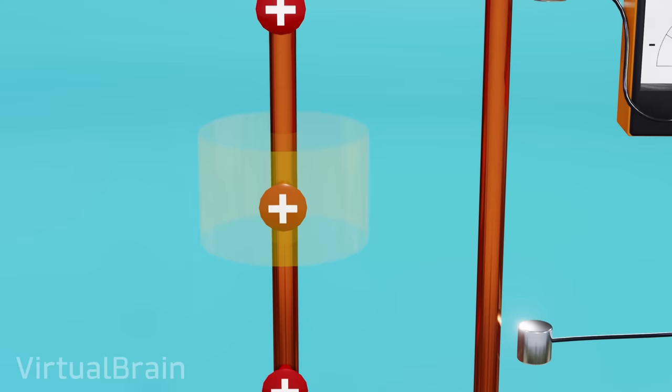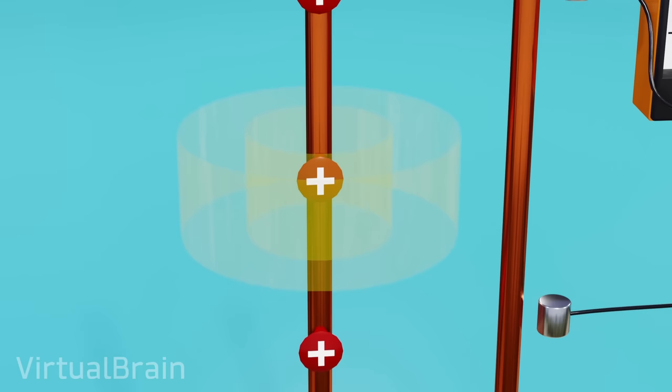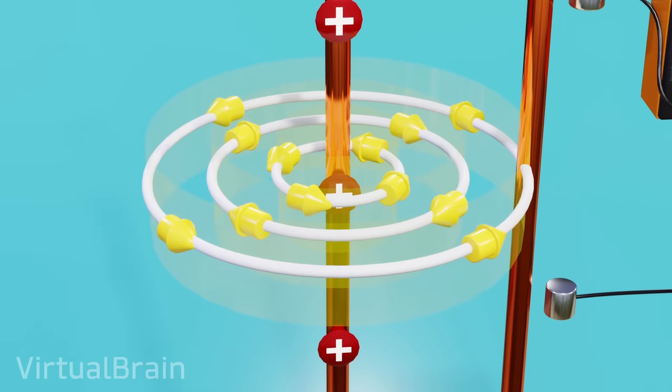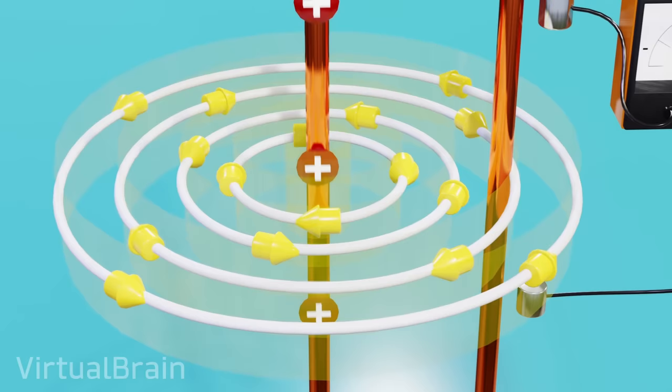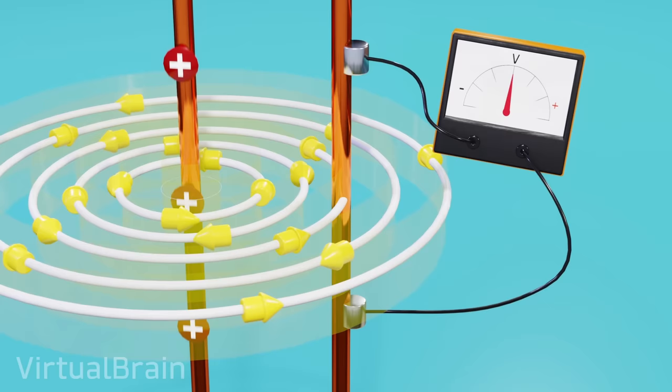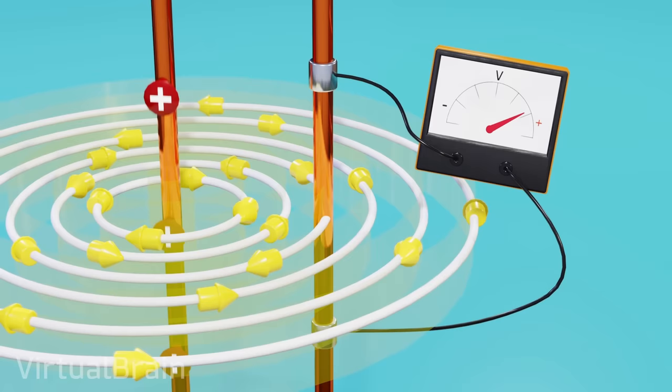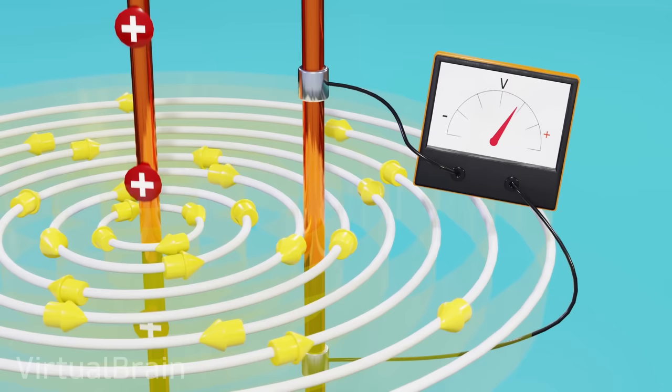If we continuously change the direction of the current passing through the transmitting antenna, although the magnetic field will continue to expand in the shape of a cylinder, its direction will reverse at the same frequency as the polarity change current. Because of this, the receiving antenna will always be affected by a varying magnetic flux, so the voltage will not disappear. Its sign will vary continuously at the same frequency as the direction of the magnetic flux varies. That is, the receiving antenna will be generating an alternating current.